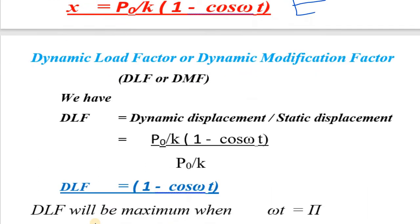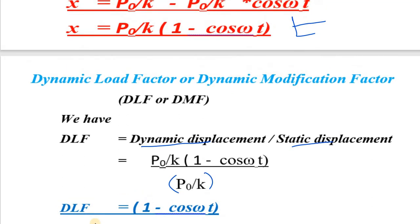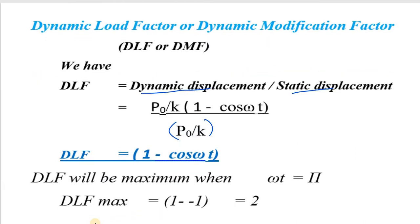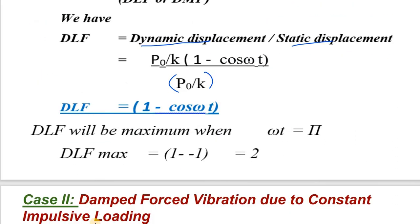The dynamic magnification factor (DLF) is dynamic displacement divided by static displacement. Static displacement is always p0/k, so DLF equals 1 minus cos(ωt). DLF is maximum when ωt equals π, giving DLF maximum equals 2. That is because cos(180°) equals minus one, so 1 minus (minus 1) equals 2. So the maximum dynamic magnification factor is 2.